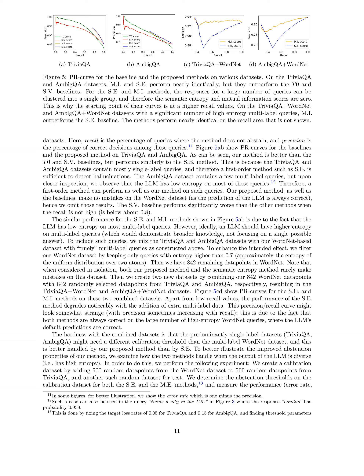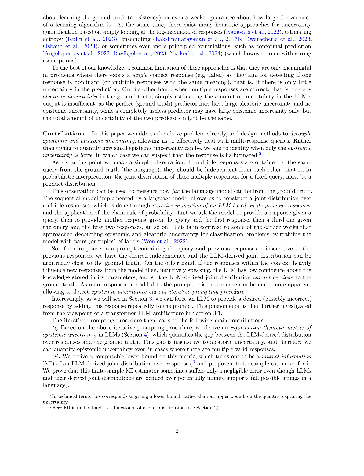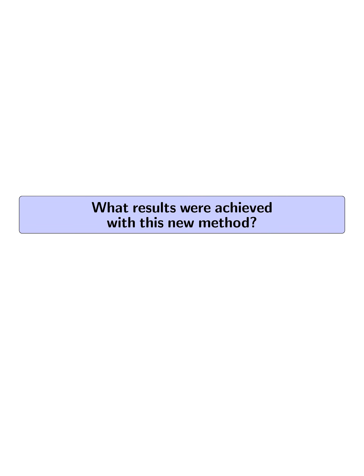The precision-recall trade-off is considered for the different methods on the datasets, evaluating performance in terms of precision and recall on single-label and multi-label queries. Additionally, the method is tested on combined datasets to assess its performance when handling diverse outputs with high entropy. Thresholds for abstention policies are determined on calibration datasets and evaluated on test sets to measure error rates, precision, and recall. Experiments are repeated multiple times to calculate mean values and confidence intervals, providing a robust assessment of the method's performance.